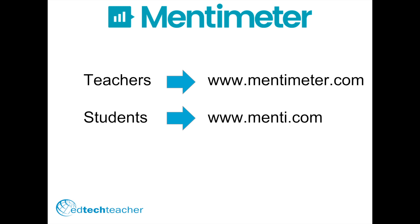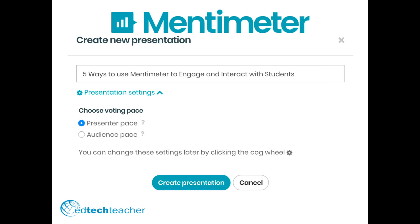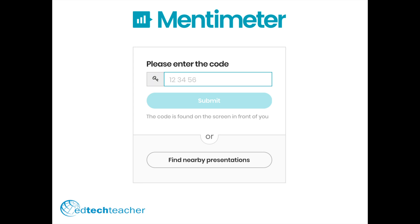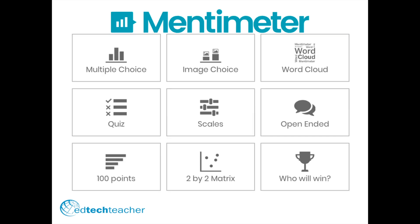Teachers start by creating a new presentation and choosing presenter pace or audience pace. Students just need the unique six-digit code provided by the teacher. Mentimeter allows for nine different types of questions; today we will just talk about five.